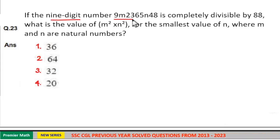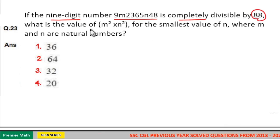If the 9-digit number 9m2365n48 is completely divisible by 88, what is the value of m squared times n squared for the smallest value of n, where m and n are natural numbers?